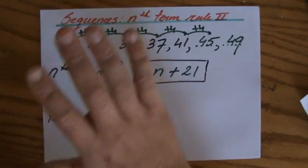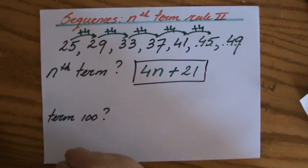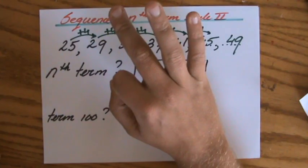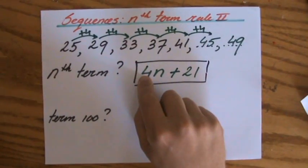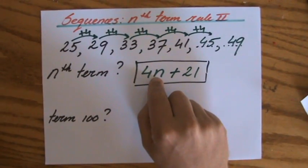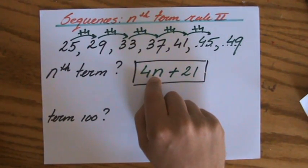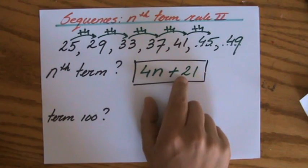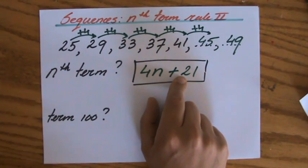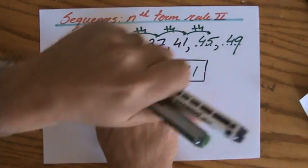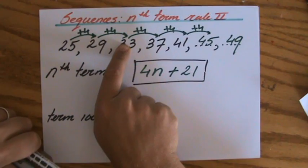I'm always a little bit modest, so I check my answer. Let's say for the third term: 4 times 3 is 12, plus 21 — that's 33. And the third term is indeed 33. Fantastic.